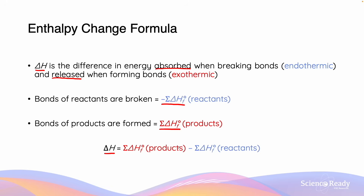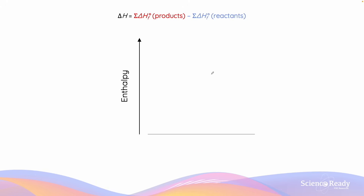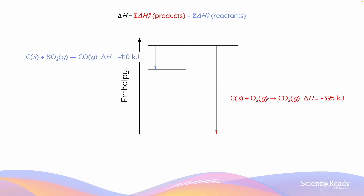The endothermic and exothermic processes are highlighted by the blue and red colours. To further illustrate the relationship between delta HF of products and delta HF of reactants, we can consider an energy cycle. The enthalpy of formation of carbon dioxide from its reactants carbon and oxygen is equal to minus 395 kJ. Similarly, the formation of carbon monoxide from carbon and oxygen has an enthalpy change of minus 110 kJ.